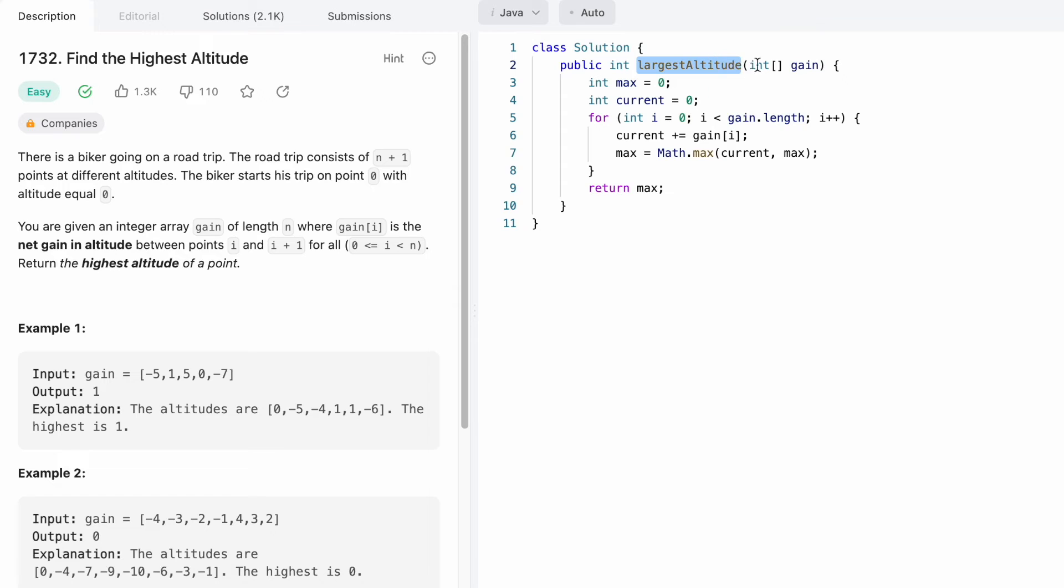Coming to the function, this is the function name and this is the input gain array of length n representing the number of elements inside the array. But there are n plus one points because we are starting at altitude zero. The return type is an int because we have to return the maximum altitude throughout the entire road trip.